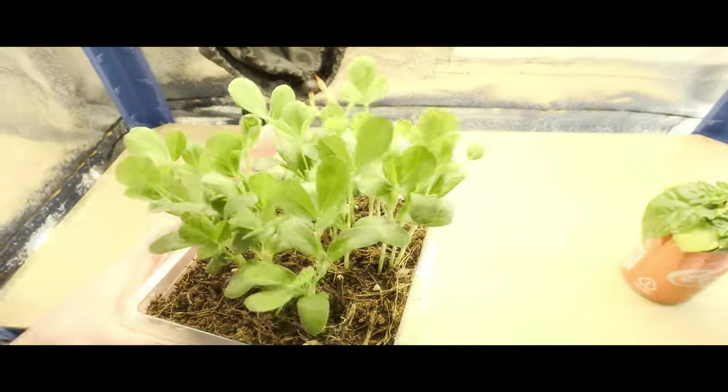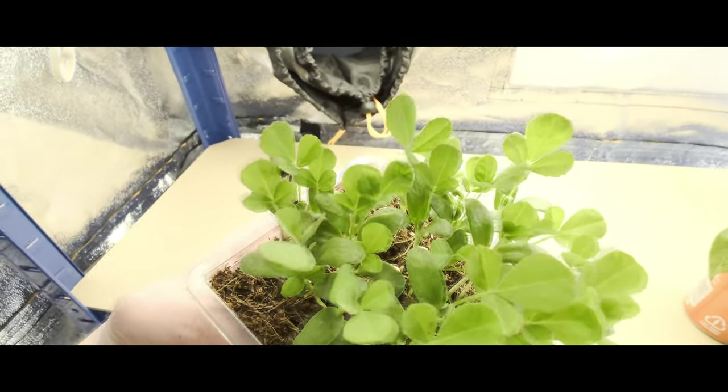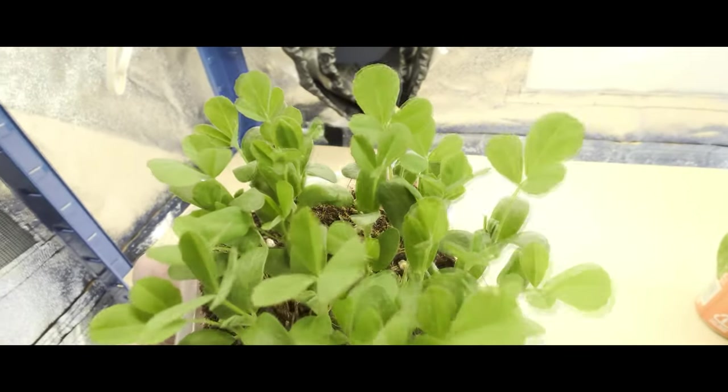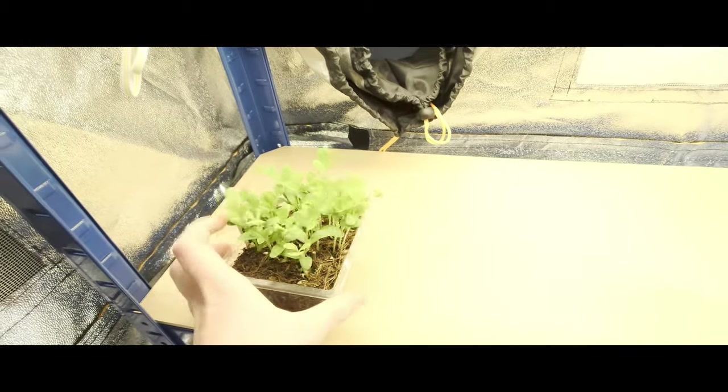And over here you've got my Fenugreek. Fenugreek's doing great. The reason it's on the bottom shelf is because I found aphids on it. I think I've got more, but you can never really be too sure. So this is the isolation room down here.